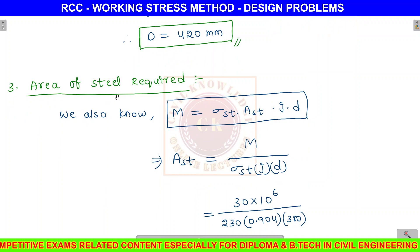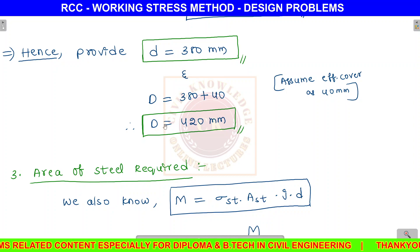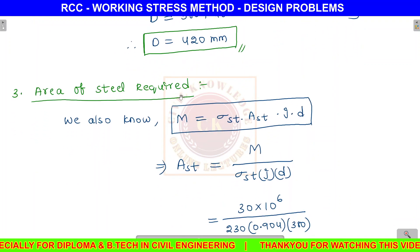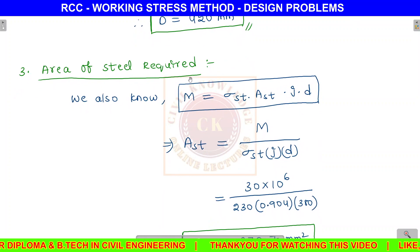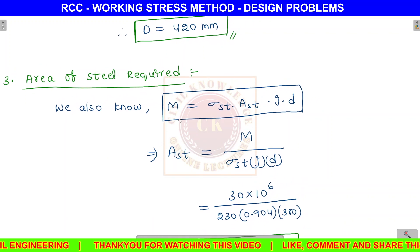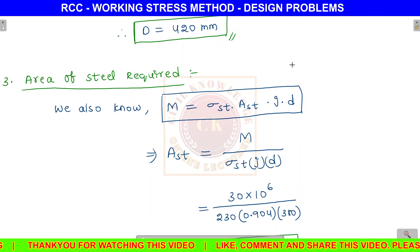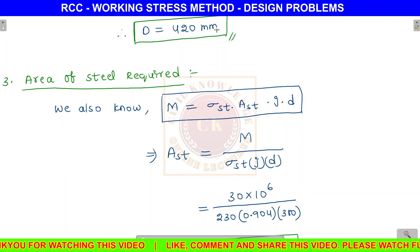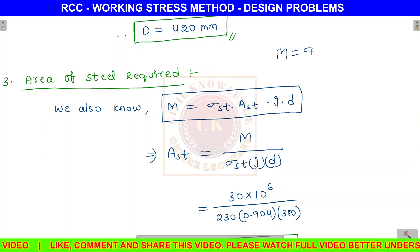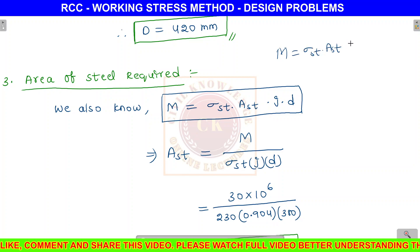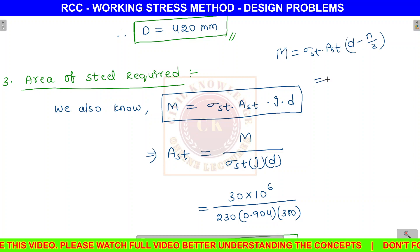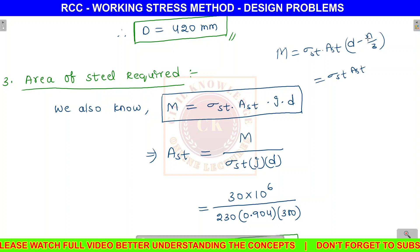Step 3: Area of steel required. We use the moment of resistance formula with respect to steel: M equals sigma st into Ast into (d minus n by 3). Since n equals k into d, the term (d minus n by 3) equals d into (1 minus k by 3) equals j into d.